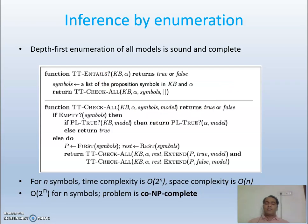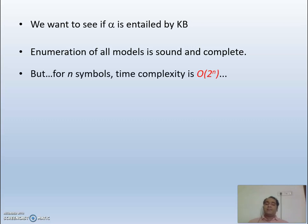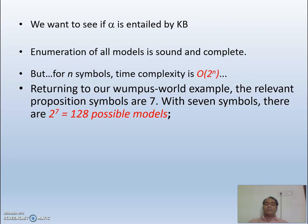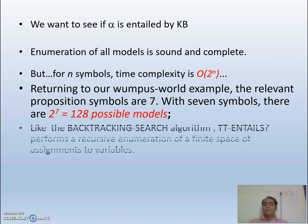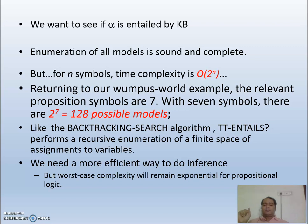For n symbols, the time complexity is O(2ⁿ) and space complexity is O(n). This makes the problem co-NP complete. Returning to the Wumpus World example with 7 relevant symbols, there are 2⁷ = 128 possible models — similar in structure to a backtracking search algorithm. TT-Entails performs a recursive enumeration of a finite state space of variable assignments. We need a more effective approach, but worst-case complexity remains exponential for propositional logic.